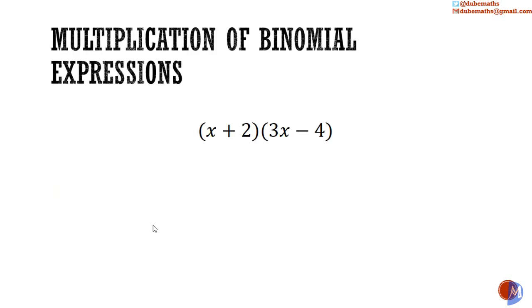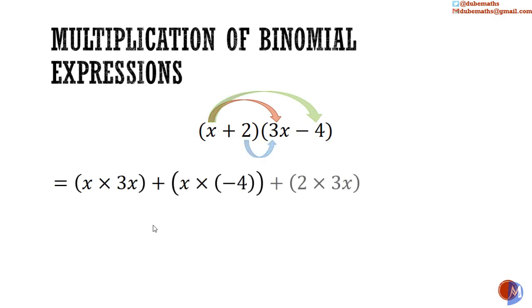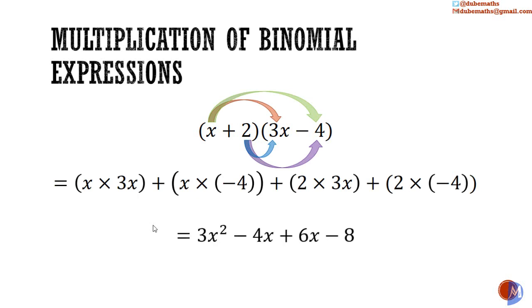Now to the latter: a two-termed expression multiplied by another two-termed expression. For example, x plus 2 multiplied by 3x minus 4. The rule here is to multiply each term in each expression by all the terms in the other expression. Thus, we multiply x by 3x, add it to x multiplied by negative 4, add that to 2 multiplied by 3x, and add it to 2 multiplied by negative 4, which gives 3x squared minus 4x plus 6x minus 8. Negative 4x and positive 6x are like terms and can be added to get positive 2x.